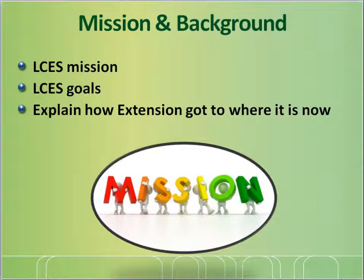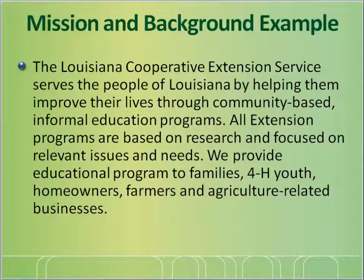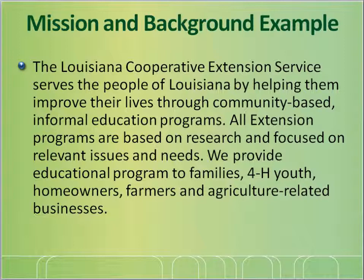The next basic element of a grant proposal is a section about your organization's mission and background — in this case, the Cooperative Extension Service. Describe our mission: to improve the lives of Louisianans through an informal educational process that uses research-based knowledge focused on their issues and needs. Then write about Extension's goals that most pertain to the project you are proposing, and briefly share how the Extension Service got where it is now. Here's a very generic mission and background example: The Louisiana Cooperative Extension Service serves the people of Louisiana by helping them improve their lives through community-based, informal education programs. We provide educational programs to families, 4-H youth, homeowners, farmers, and agriculture-related businesses.